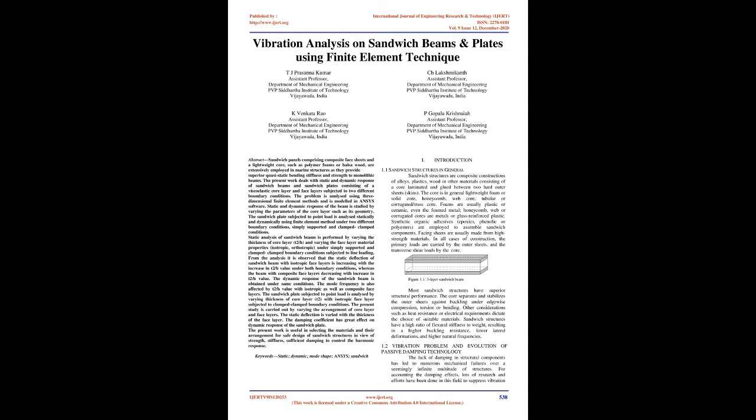Foams are usually plastic or ceramic, or even foamed metal; honeycomb, web, or corrugated cores are metals or glass-reinforced plastic. Synthetic organic adhesives — epoxies, phenolic, or polyesters — are employed to assemble sandwich components. Facing sheets are usually made from high-strength materials. In all cases of construction, the primary loads are carried by the outer sheets, and the transverse shear loads by the core.